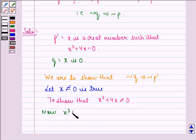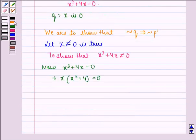Now X³ plus 4X equals 0 implies that X into X² plus 4 equals 0. This implies that either X equals 0 or X² plus 4 equals 0.